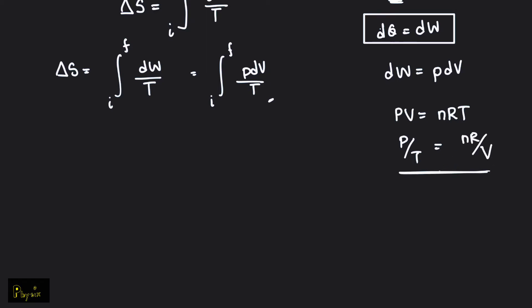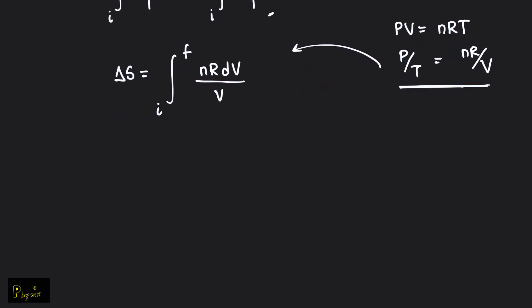Plugging this in, delta S is the integral of nR over V dV, where n and R are constants — n is the number of moles of ideal gas and R is the ideal gas constant. So delta S is basically nR ln(Vf/Vi).